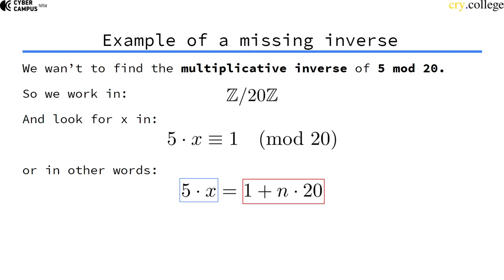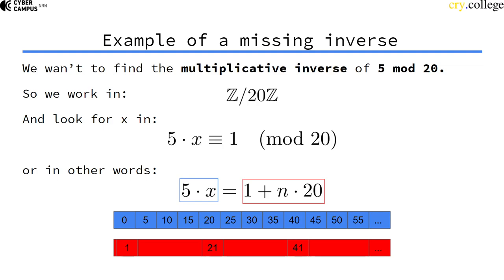Can the left side actually, with any value of x, match the right side with any value of n? To visualize that, I've drawn the number line here. The top is the left side, so multiples of 5 for different values of x: 0, 5, 10, 15, 20, and so on. The right side, possible solutions for different values of n, are shown in red: 1 if n is 0, then 21, then 41.